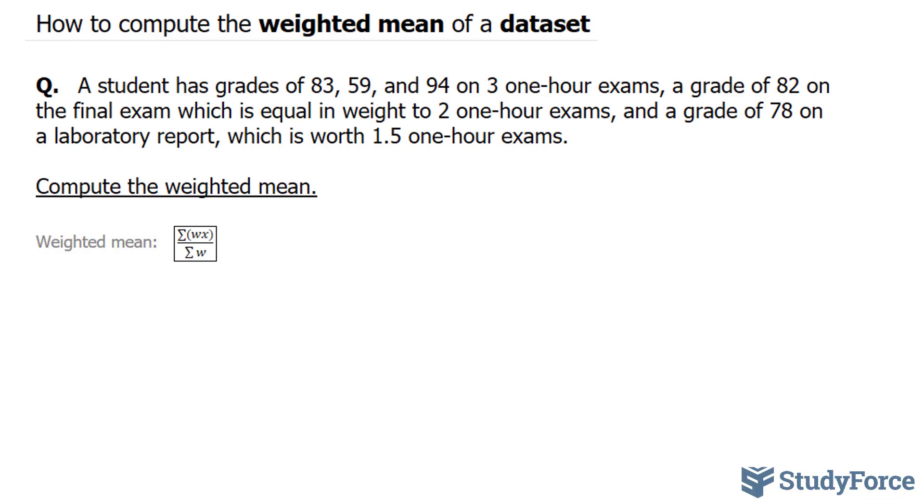To compute the weighted mean, we'll use this formula, which tells us that if we take the sum of each of the grades, multiply by the weight, and divide it by the total sum of weights, we will get the weighted mean.